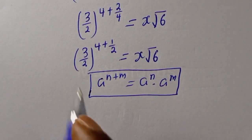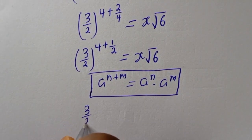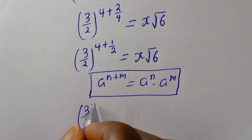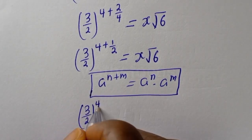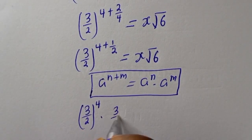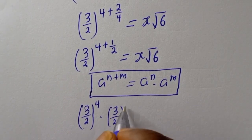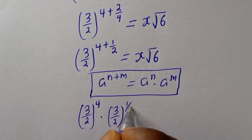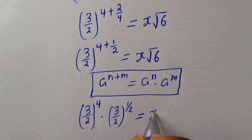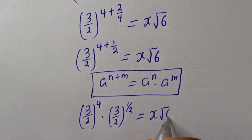This is 3 over 2 to the power of 4, multiplied by 3 over 2 to the power of 1 over 2, is equal to s square root of 6.